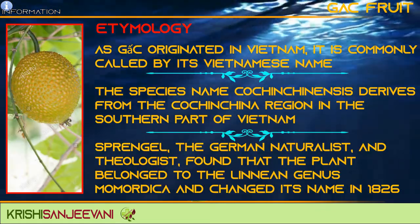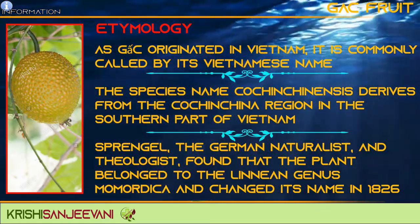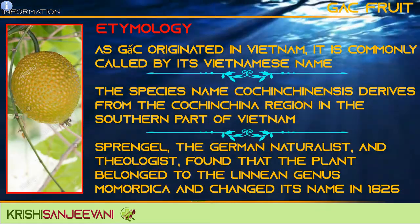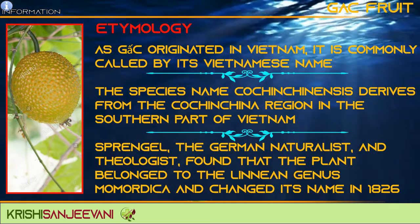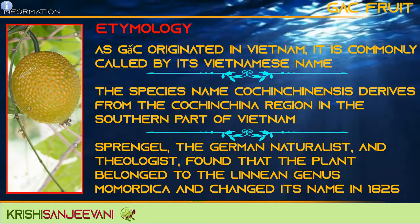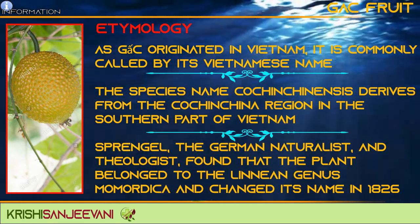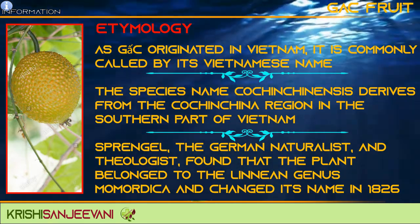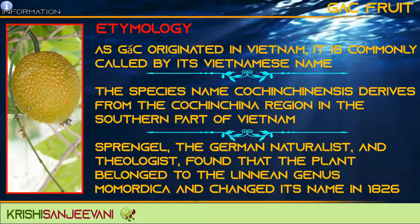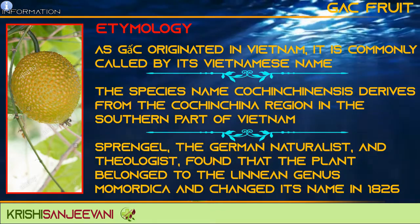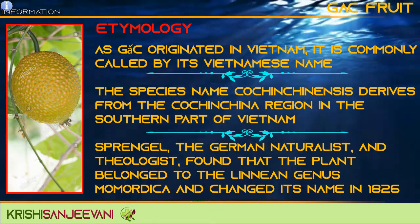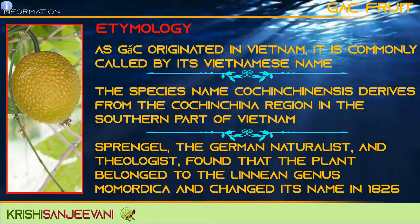As Gac originated in Vietnam, it is commonly called by its Vietnamese name. The species name Cochinchinensis derives from the Cochinchina region in the southern part of Vietnam.